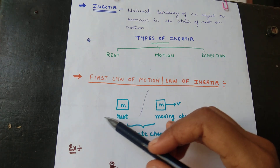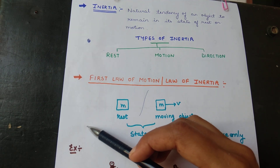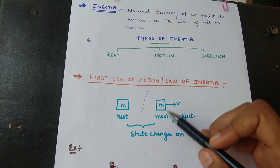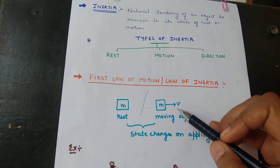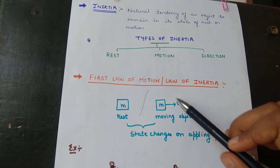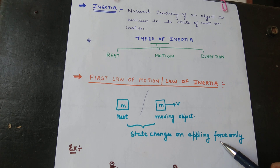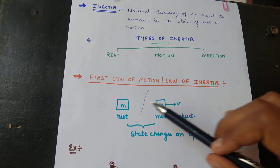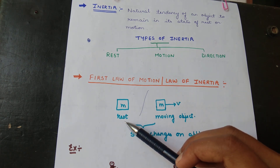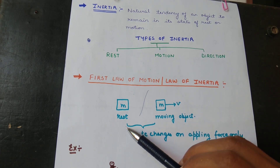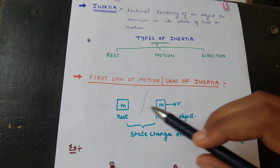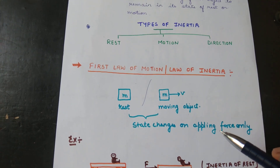For example, if a stone or a football is at rest, it will not move until we kick it or an external force is applied — it remains in its inertia of rest. If an object is already moving, it will stop or change speed only when a force is applied. To change the state of any object, an external force is required. That current state is what we call inertia — that is why this law is also known as the Law of Inertia.